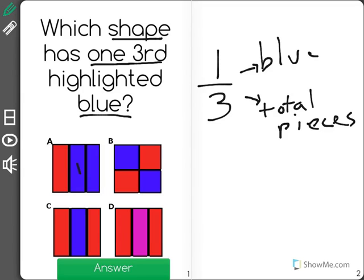Now A, you can see, has one, two pieces that are blue. B has one, two out of four that are blue. That's not correct; this one was two out of three.